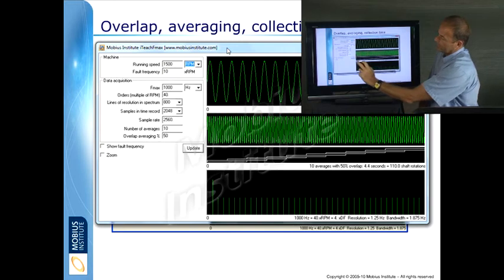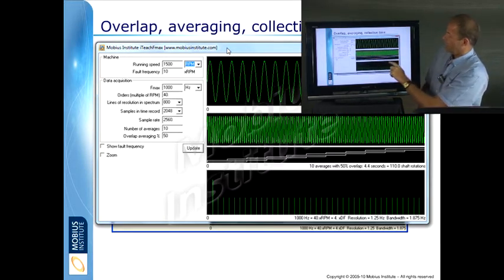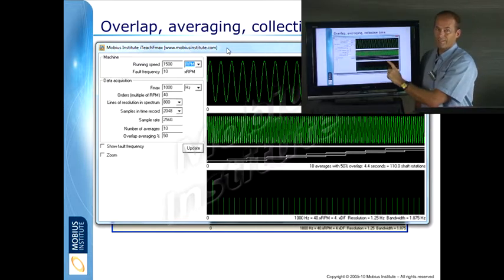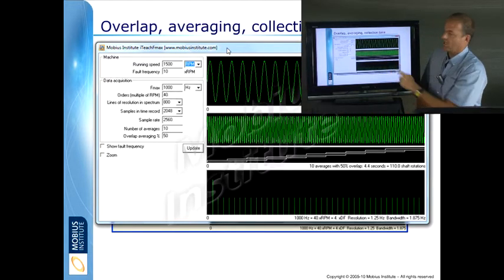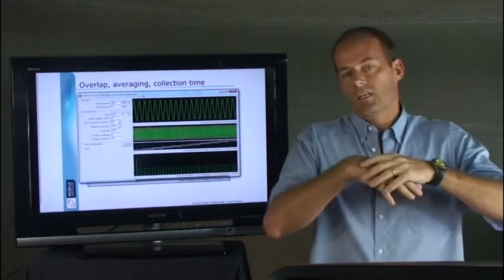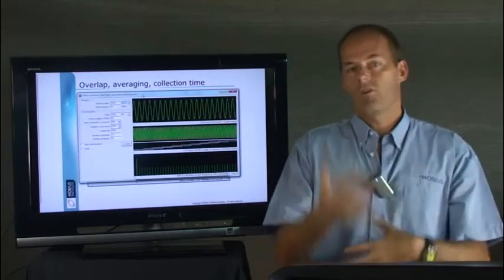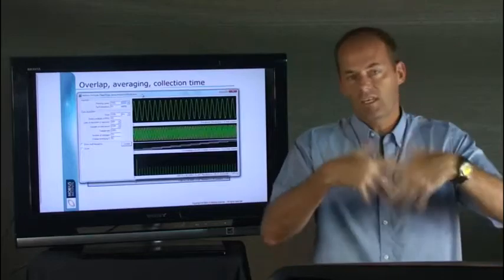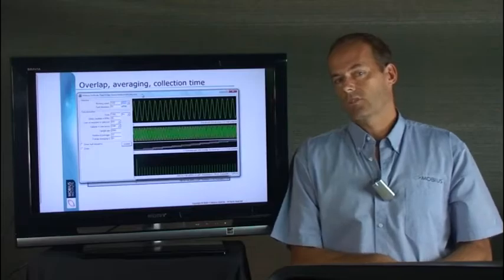If we then choose 10 averages with 50% overlap, the analyzer, and you see these white bars represent the overlap times for the averages, you'll see that the machine during that time would have, it's 4.4 seconds. We're not talking a long time, are we? And the shaft's actually rotated 110 times. That's plenty of time in the process to really capture all the variation. If the gears are meshing, we'll catch hunting tooth frequency problems and all the rest of it.